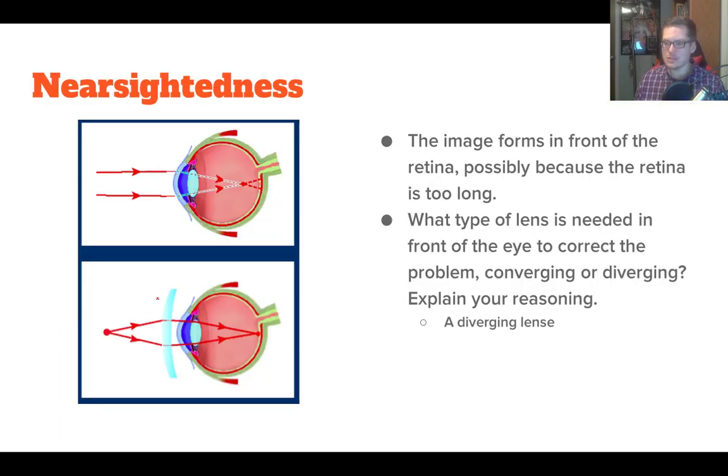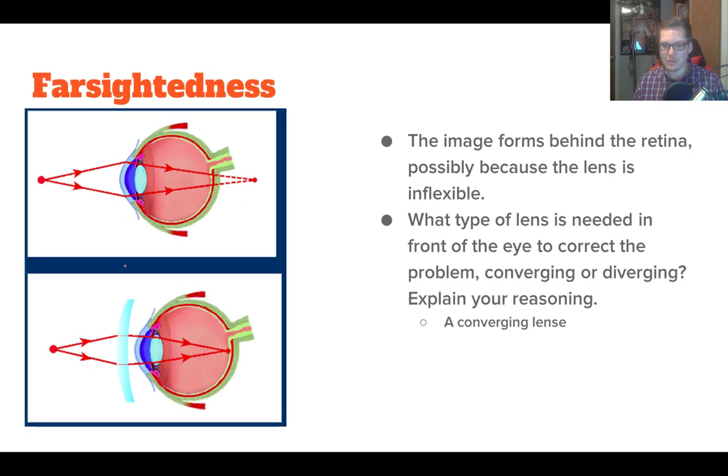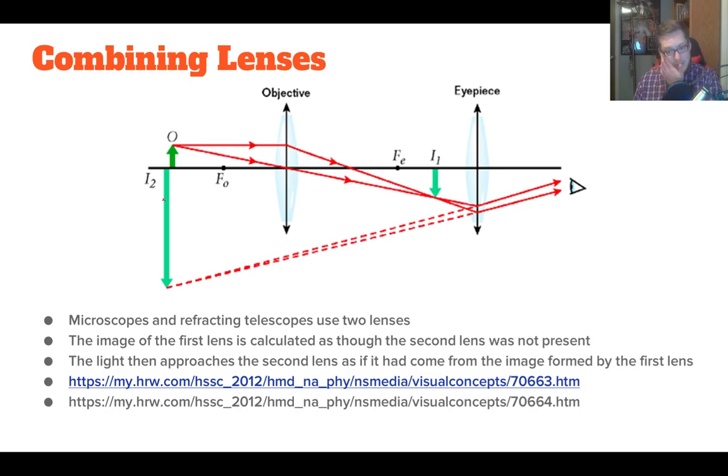Specifically, here's a nearsighted. We just talked about it, and here's these rays that come in. You'd use a diverging lens to fix that. Same thing here with the farsighted. You'd have a converging lens in order to fix that.